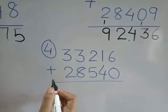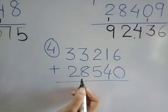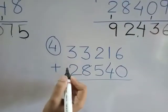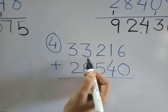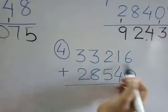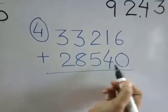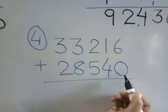Okay students, the last question is thirty-three thousand, two hundred and sixteen plus twenty-eight thousand, five hundred forty.